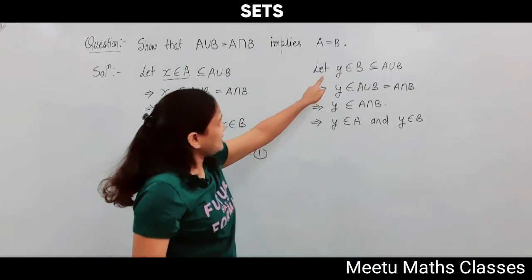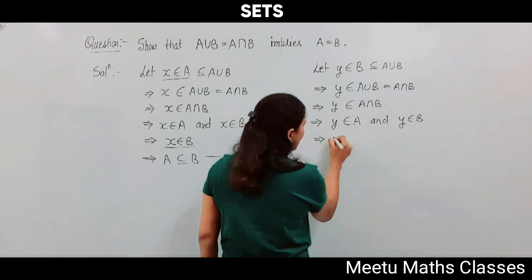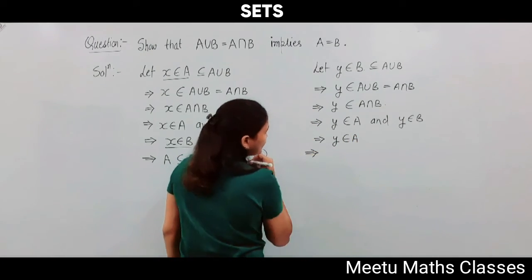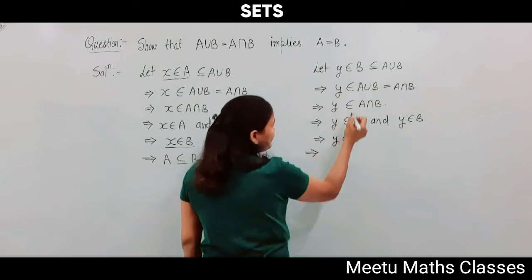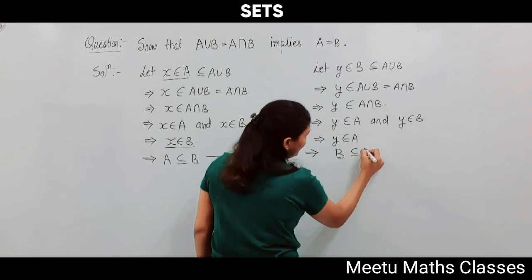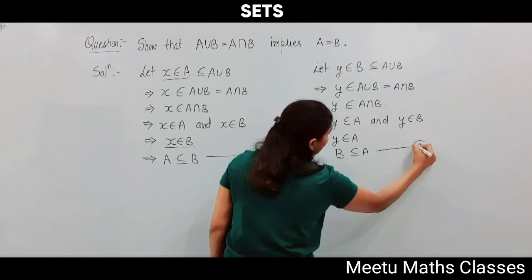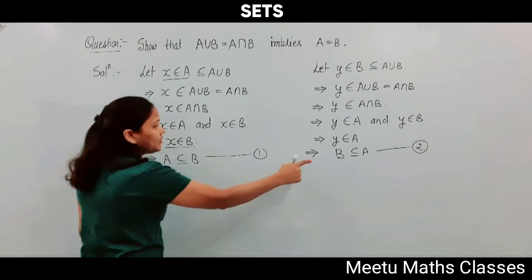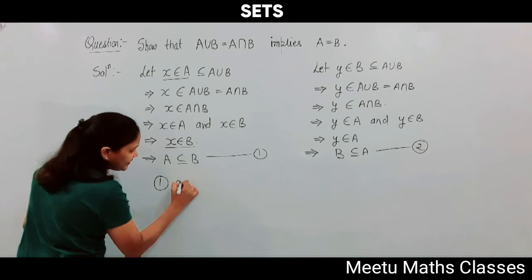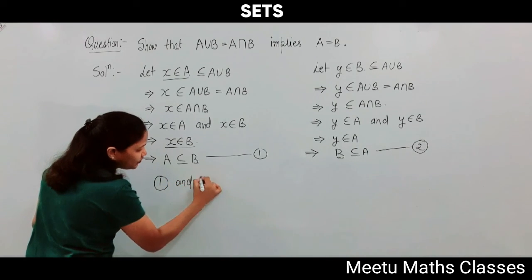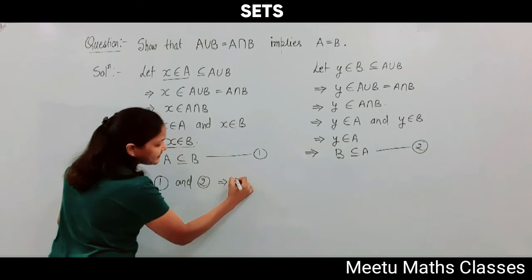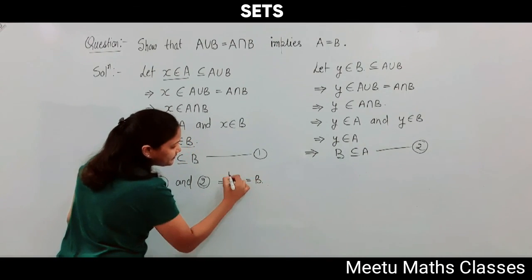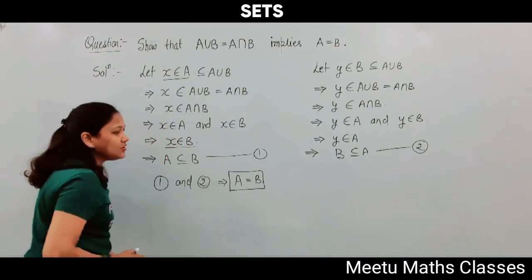Y is an element of B, and that implies Y belongs to A. This implies that B is a subset of A. Let us take this as the second statement. Now statements 1 and 2 together imply that A equals B, and this is what we wanted to show. Thank you.